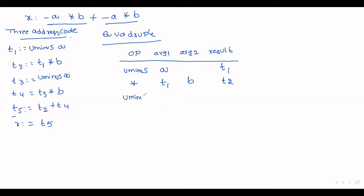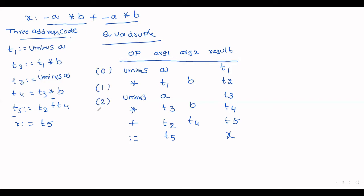Next, operation is unary minus with argument a, result stored in t3. Then multiplication between t3 and b, result is t4. Then addition performed between t2 and t4, result is t5. Last one is assignment operation — only one argument, result is stored in x. These steps are represented with indexes 0, 1, 2, 3, 4, 5. This is the quadruple representation for the given expression.